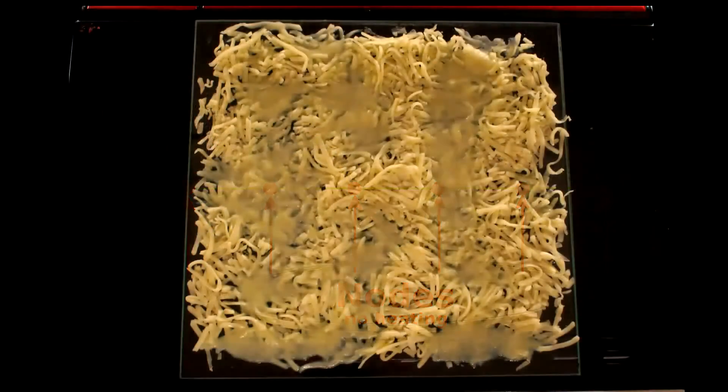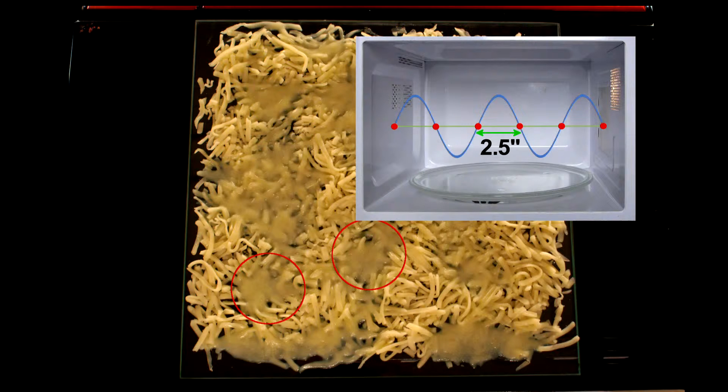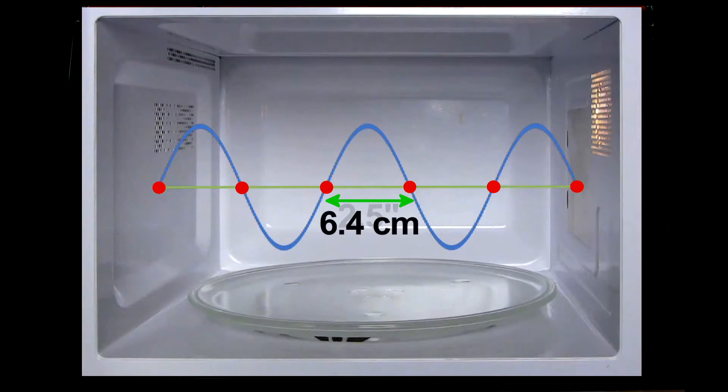If I measure the distance between melted cheese spots, I find about two and a half inches. That would be half the wavelength, the distance between nodes, and is pretty close to the actual wavelength of microwave radiation used.